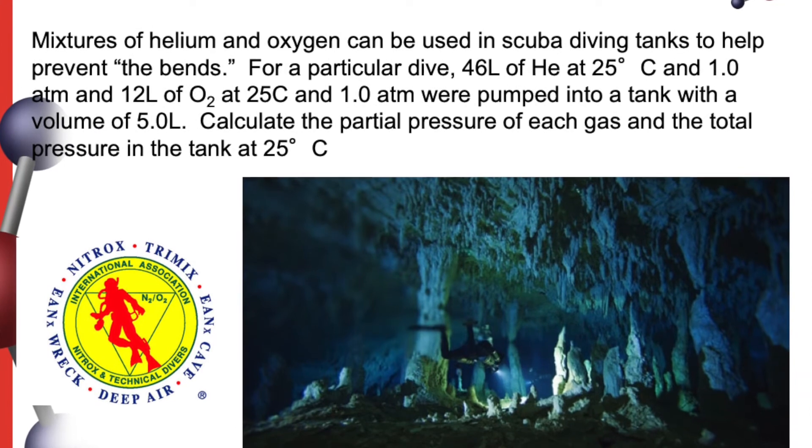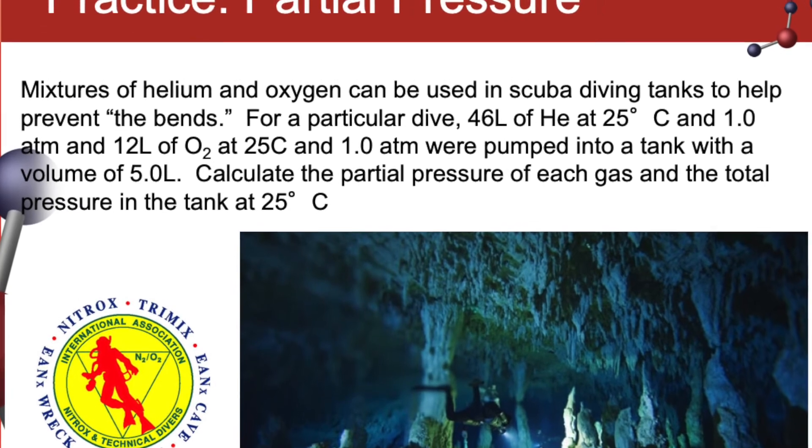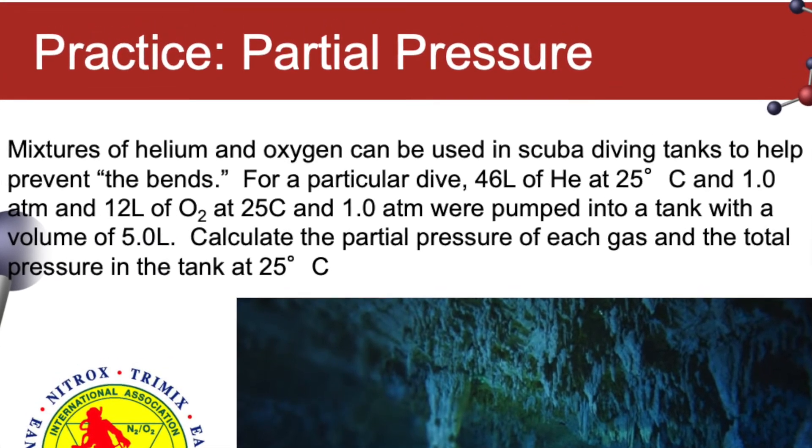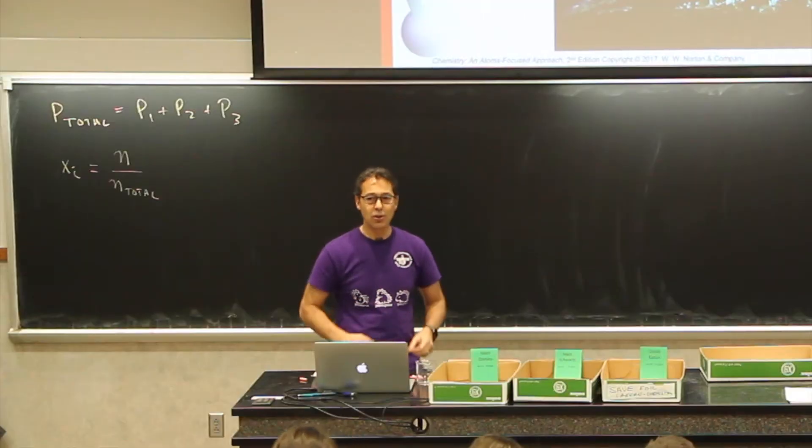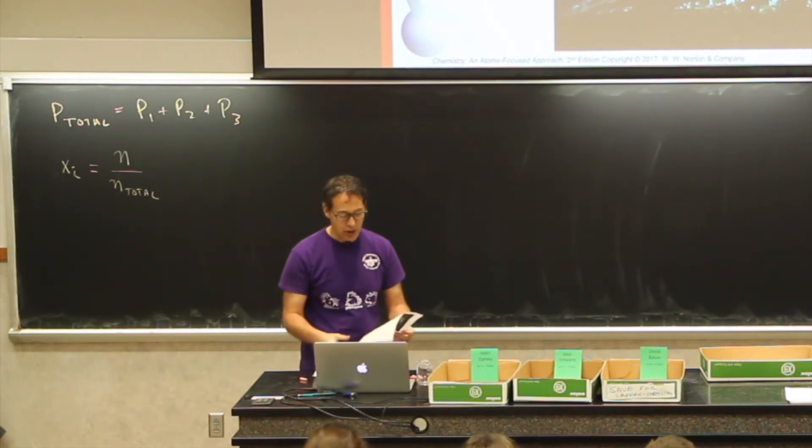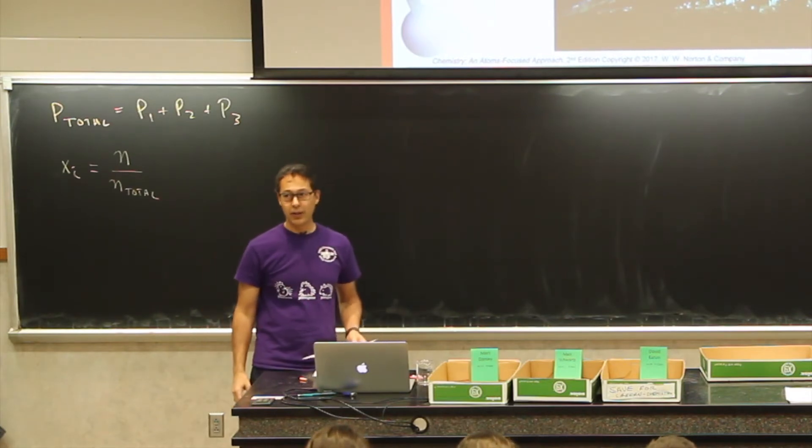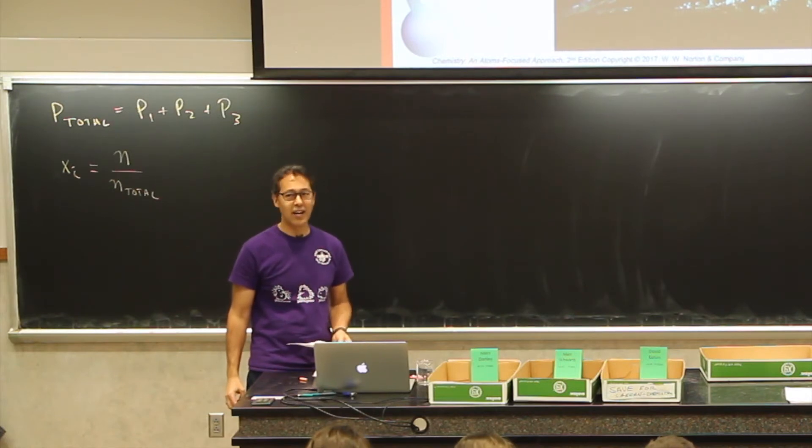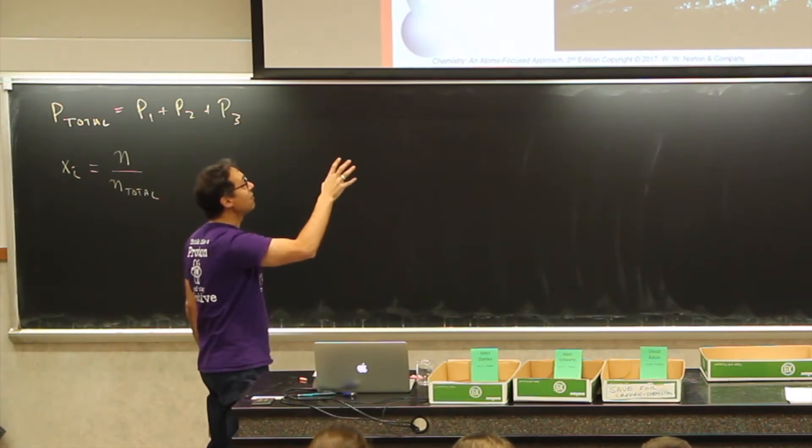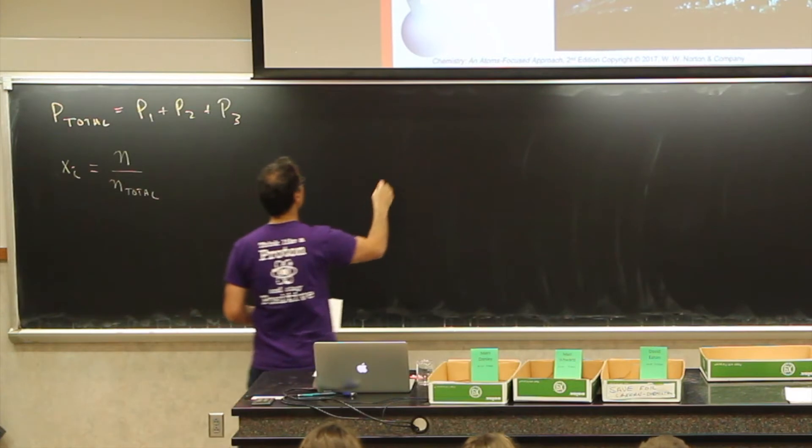The question is here: if we have mixtures of helium and oxygen and we're using them in scuba diving, for a particular dive we've got 46 liters of helium and 12 liters of oxygen at some temperature and pressure. Starting out, we'll take a look at helium.